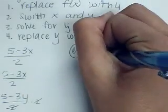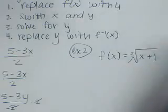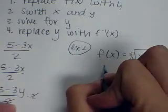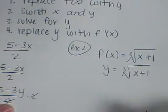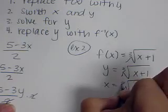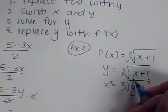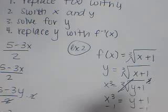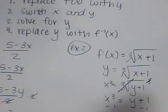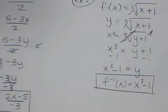Example number two. f of x equals the cube root of x plus one. We're going to replace f of x with y. Then we want to switch x and y. We want to solve for y by cubing both sides. So the cube root and cube cancel. And I have x cubed equals y plus one. Subtract one from both sides. And x cubed minus one equals y. So f inverse of x equals x cubed minus one. And that's my final answer.